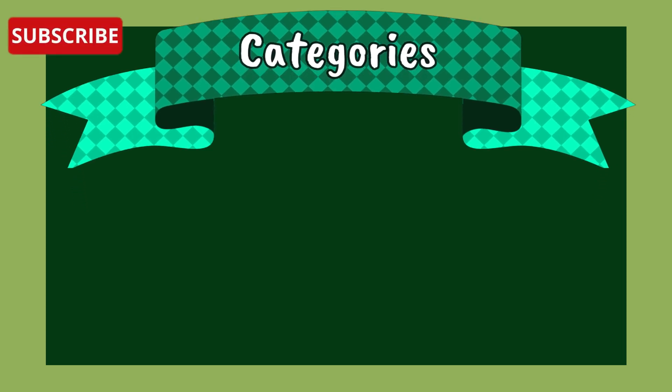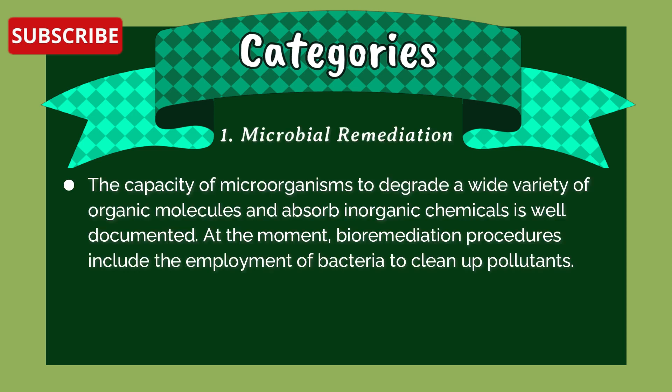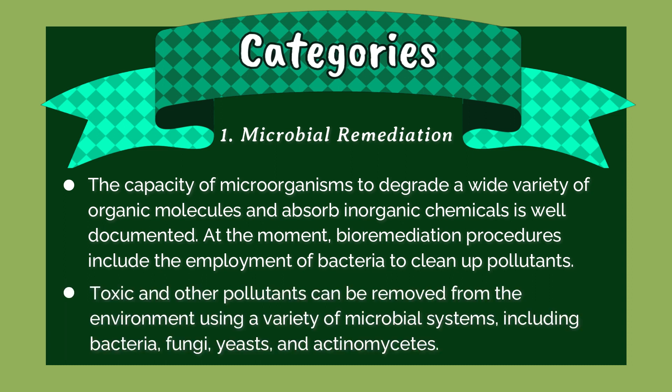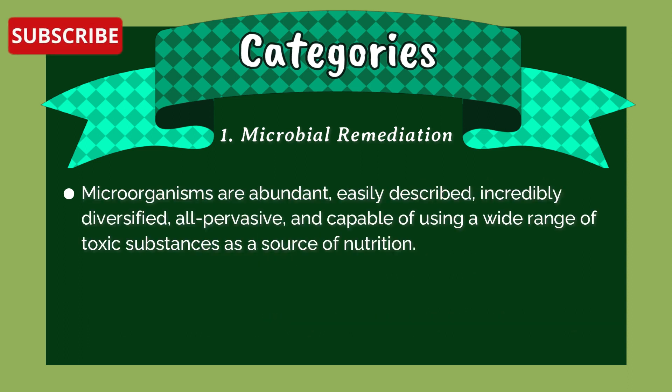Two categories of biological remediation exist. First, microbial remediation: microorganisms have the capacity to degrade a wide variety of organic molecules and absorb inorganic chemicals. Bioremediation procedures include the employment of bacteria to clean up pollutants. Toxic and other pollutants can be removed from the environment using a variety of microbial systems including bacteria, fungi, yeast, and actinomycetes. Microorganisms are abundant, easily described, incredibly diverse, all-pervasive, and capable of using a wide range of toxic substances as a source of nutrition.